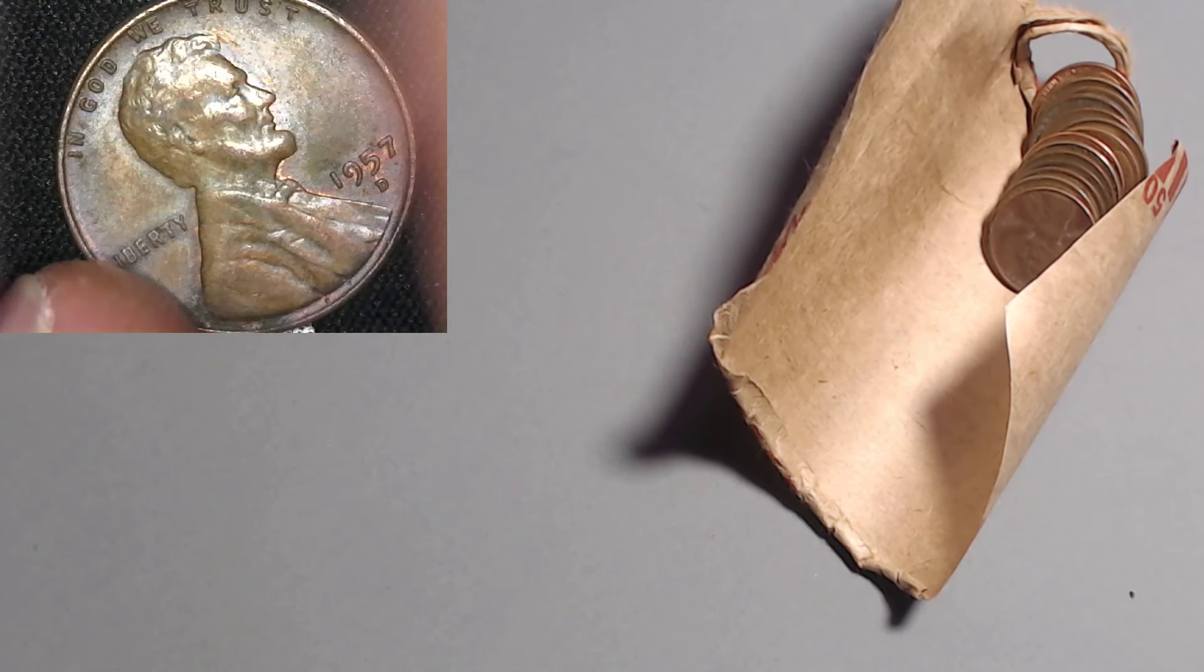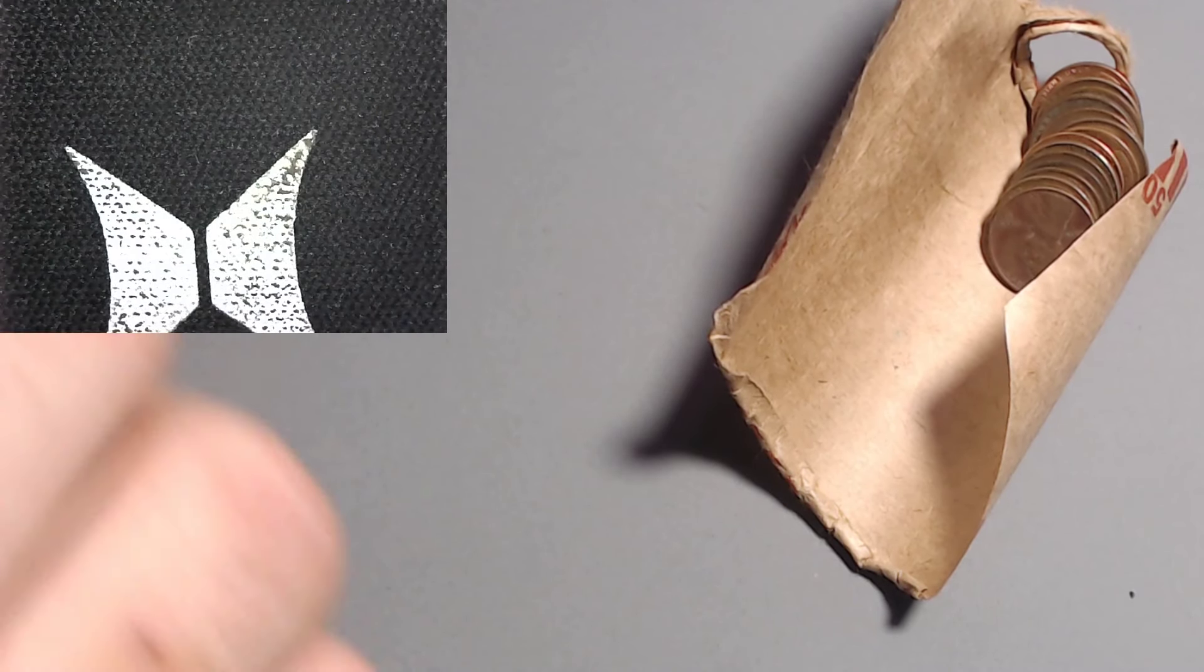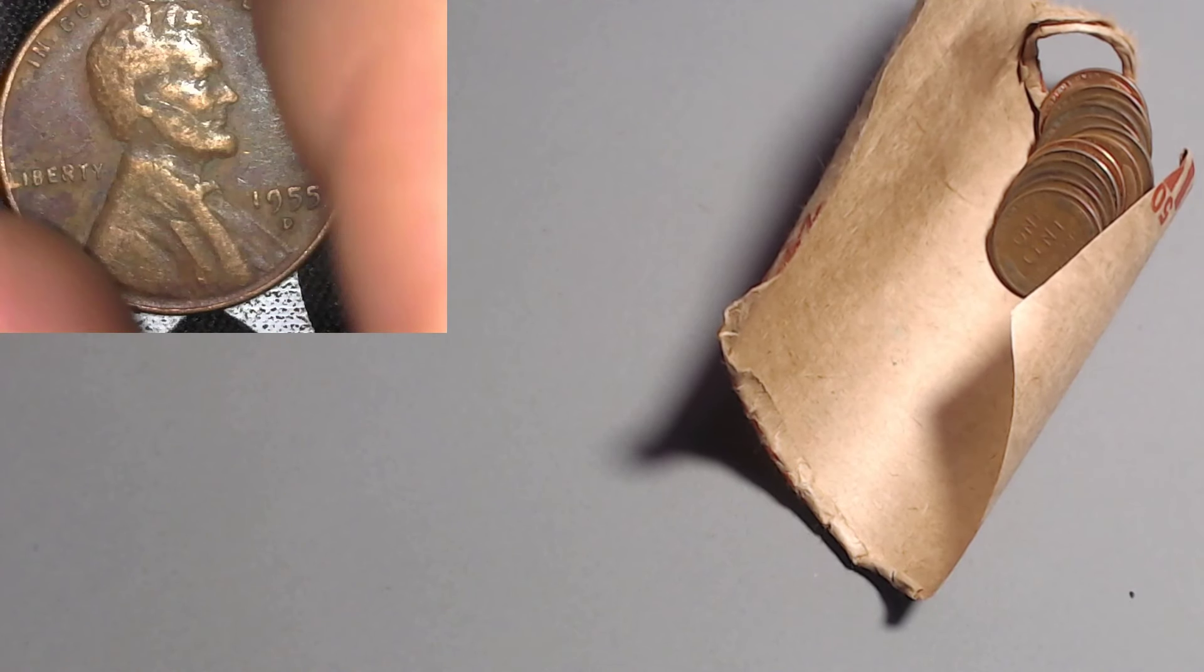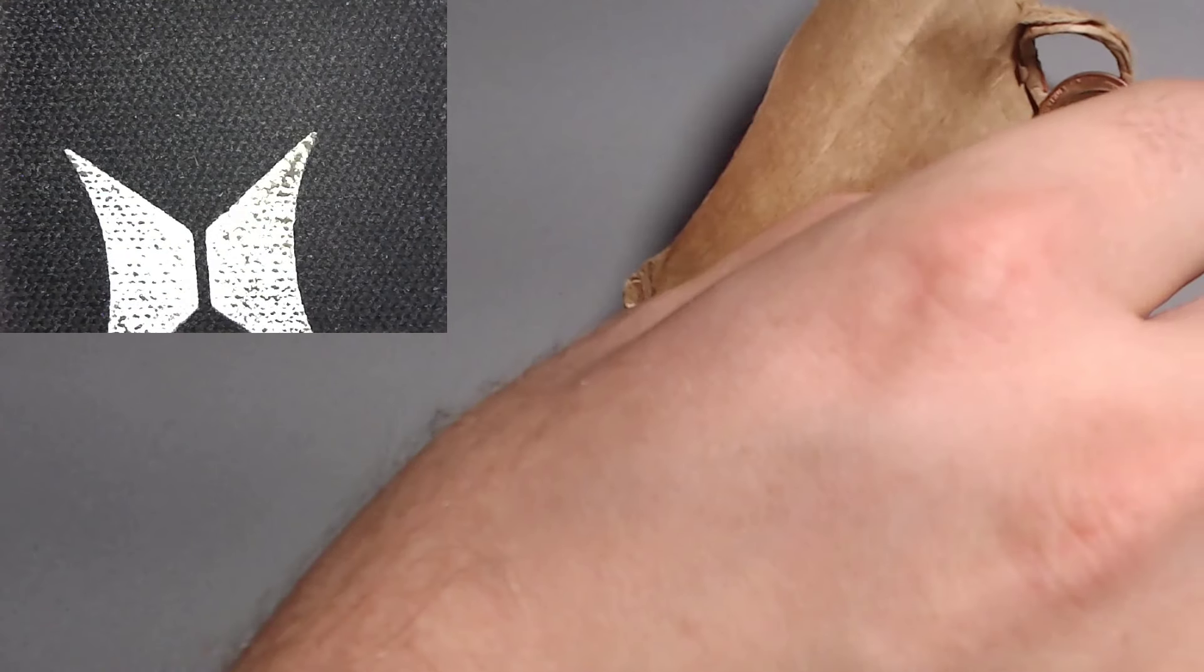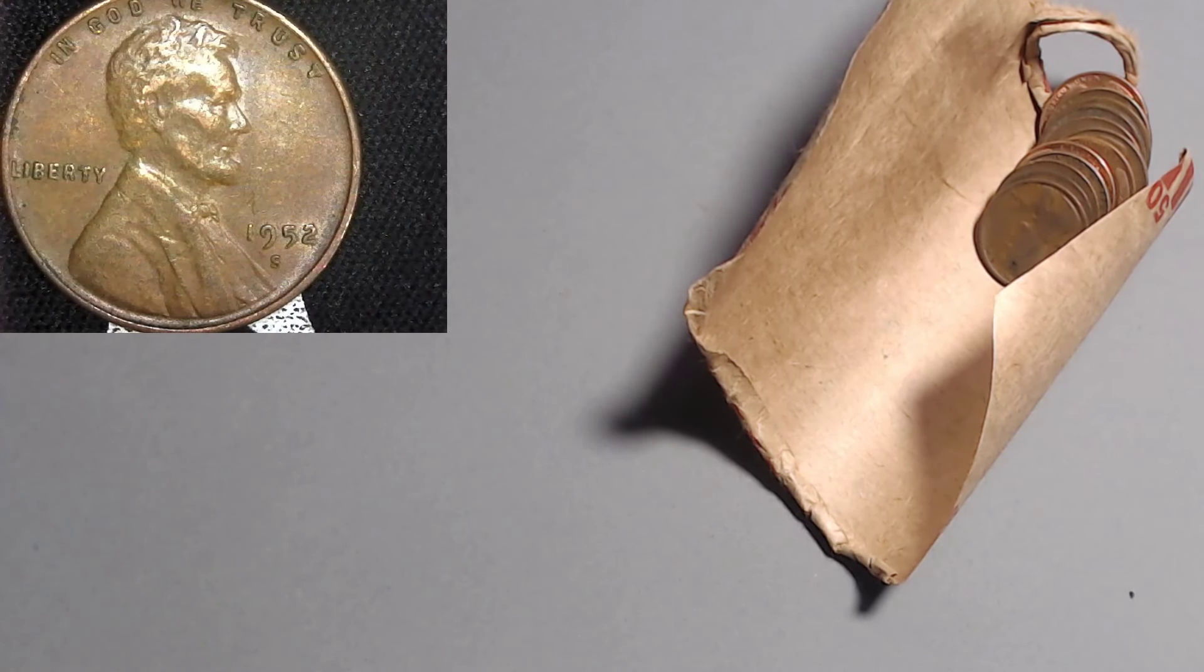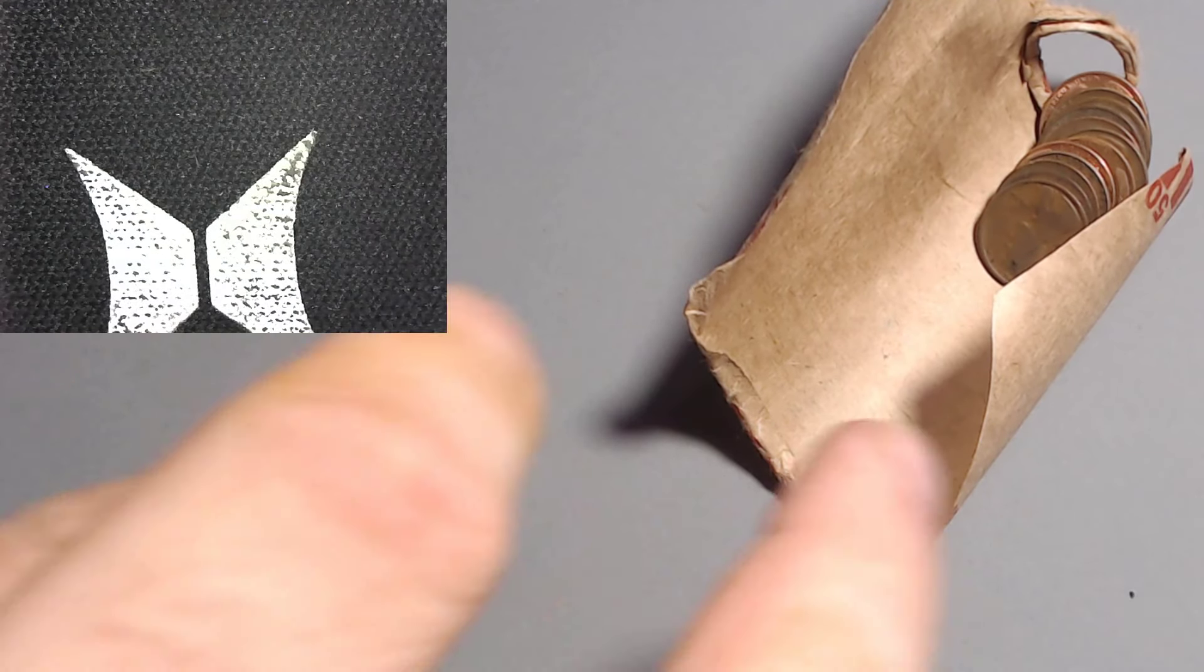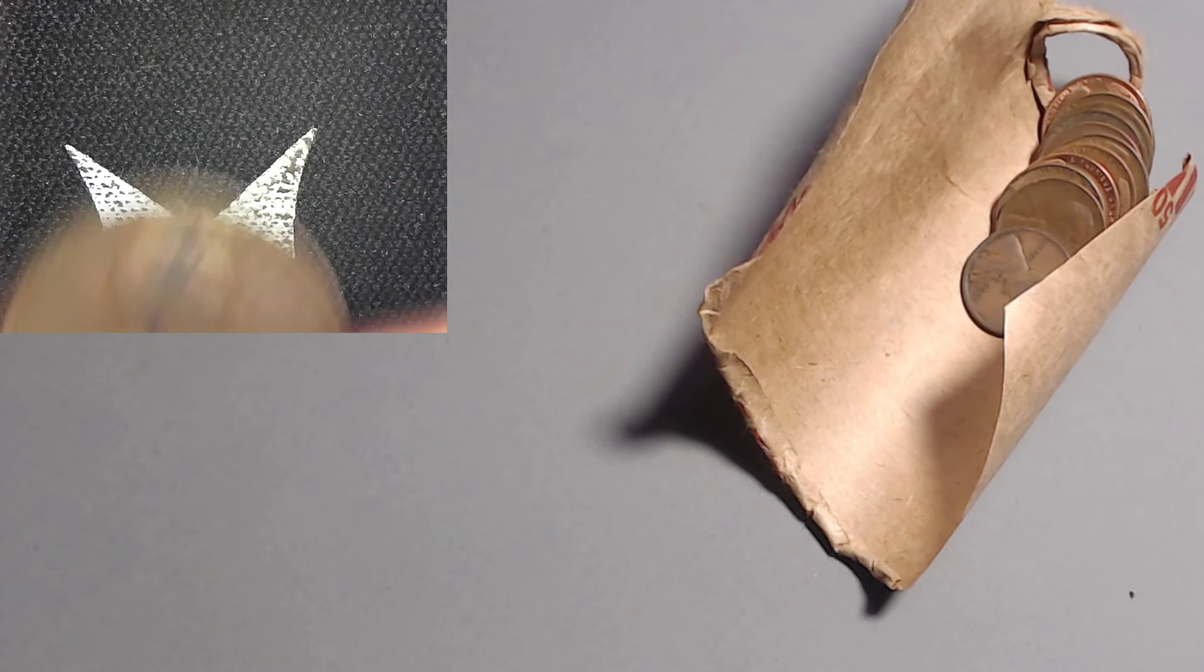To a 1957 Denver with over a billion. Get out of here. Now we got the 55 Denver with 563 million. I mean that's a little better. But I think we can do better. You got my hopes up. Now we got the 1952 San Francisco with 137 million. I mean we're getting closer to the key dates mintage wise. Let's keep that trend.